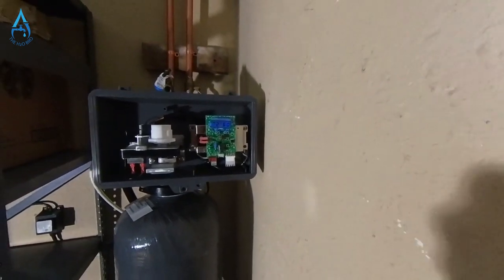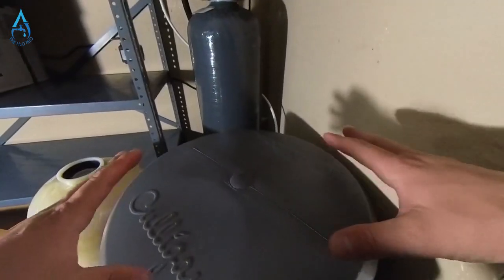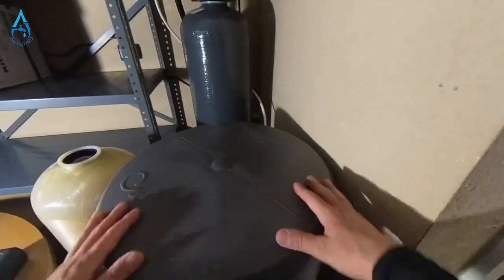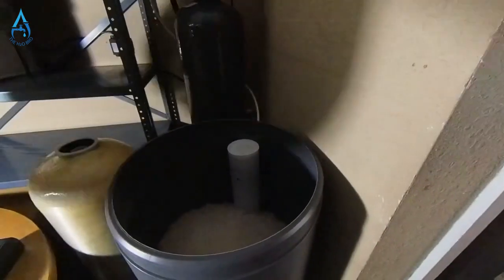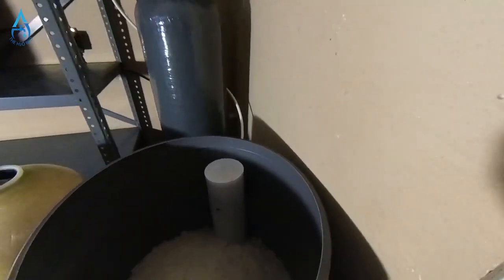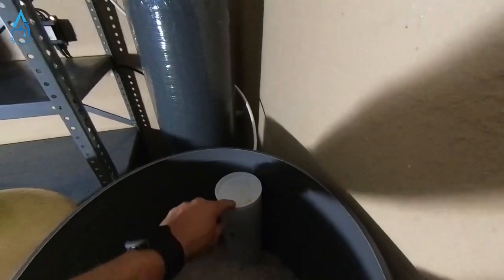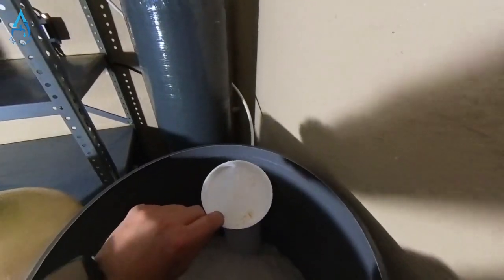At this point, you're going to make sure that your water softener is creating vacuum. You're going to come to your brine tank here, remove the lid, and find your brine well, which is right here. Remove this little white cap off of it.